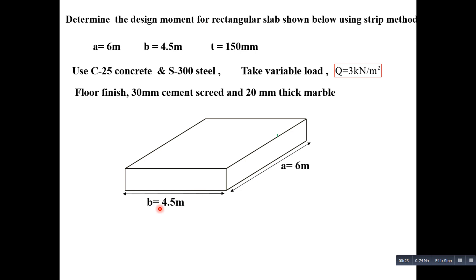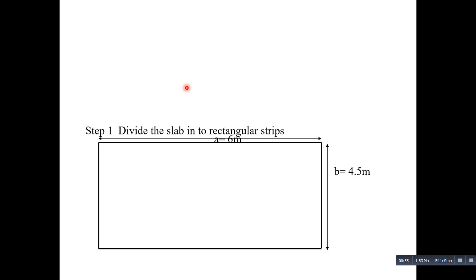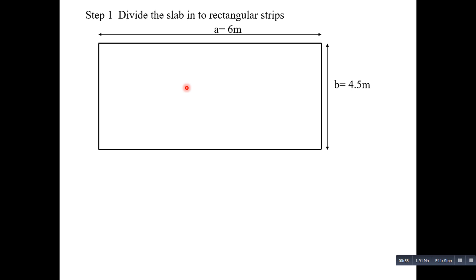The reinforced concrete slab has a width of 4.5 meters and a length of 6 meters. It has a thickness of 150 mm, a floor finish of 30 mm, and 20 mm thick marble on top. Material properties: use C25 concrete and S300 steel, and take a variable load of 3 kN/m².